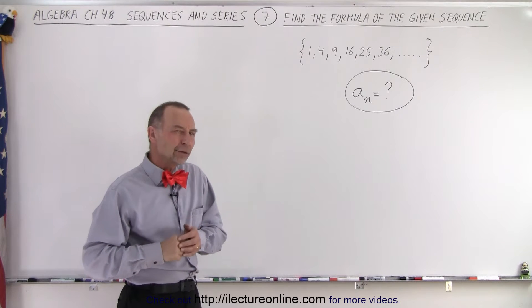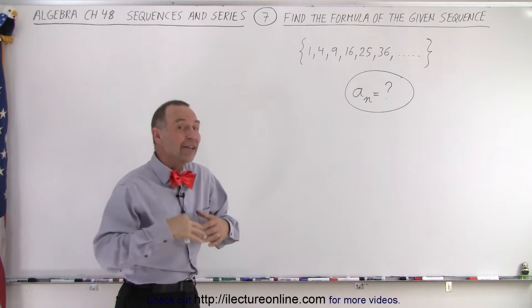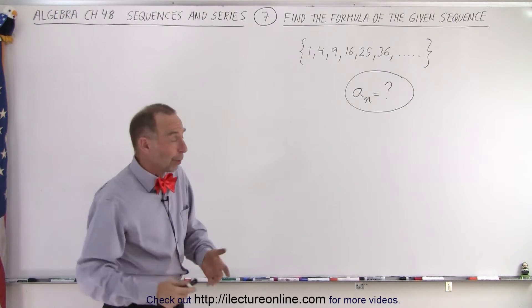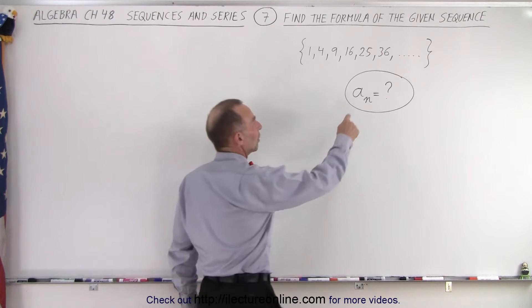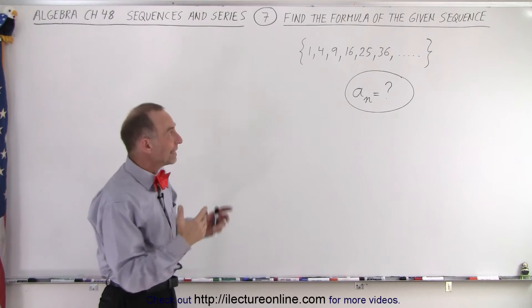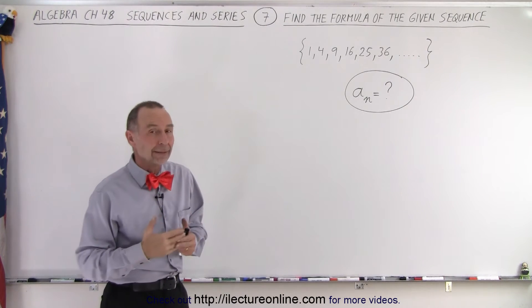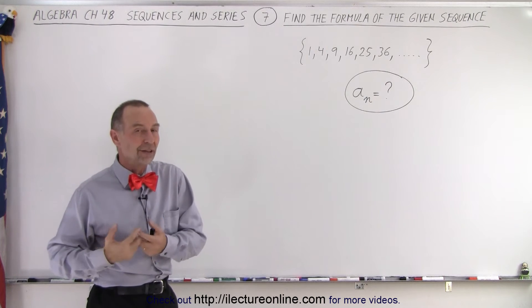They do look like they're the square of numbers, don't they? Well, to find the formula or a formula, because sometimes there may be multiple ways of expressing a formula for a sequence, we want to find the expression for the nth term of the sequence, a sub n. If we can find a way to do that in terms of n, we have ourselves a formula.